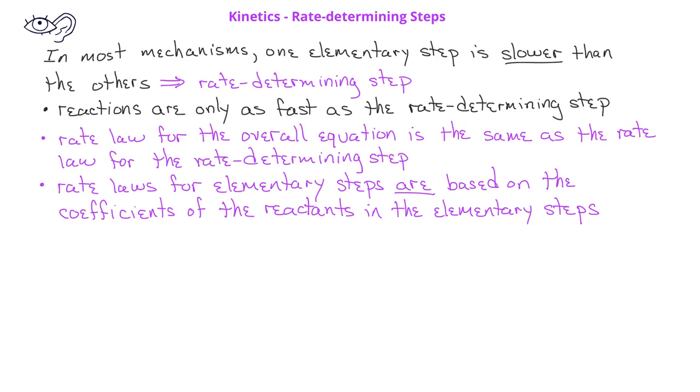...the rate law for each elementary step is based on the stoichiometry of the reactants in that elementary step. So in other words, if we had an elementary step A plus B goes to products, the rate law for this elementary step would be rate equals K times the concentration of A times the concentration of B since in the elementary step there is a coefficient of 1 for each of those reactants.